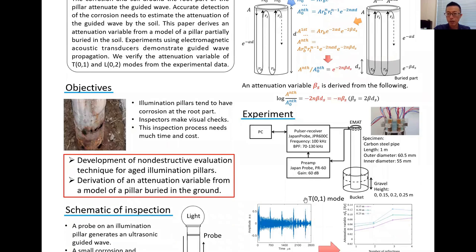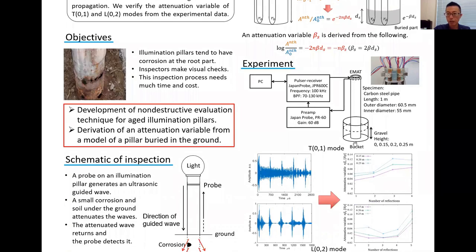In experiments, electromagnetic acoustic transducers generate two modes, T01 and L02 modes of guided wave, to a pipe-shaped specimen. We measure the amplitude of reflected waves in the condition of different heights of gravel.